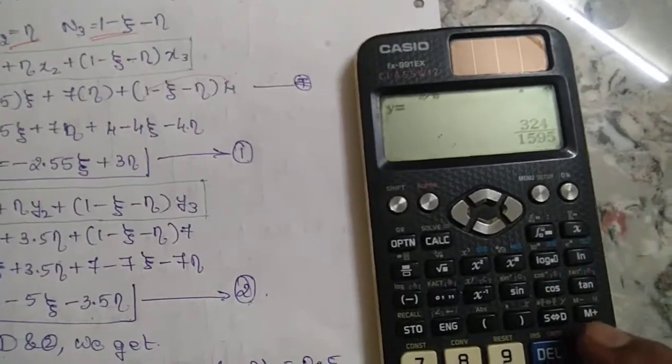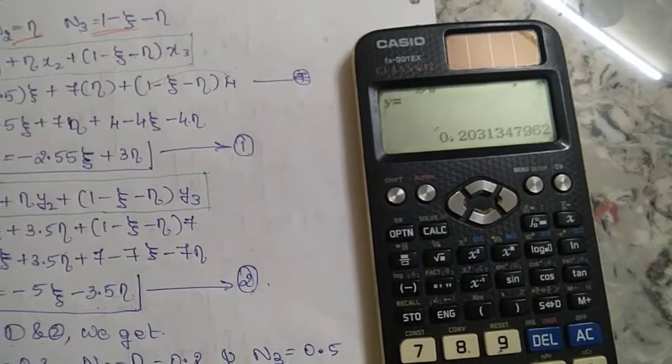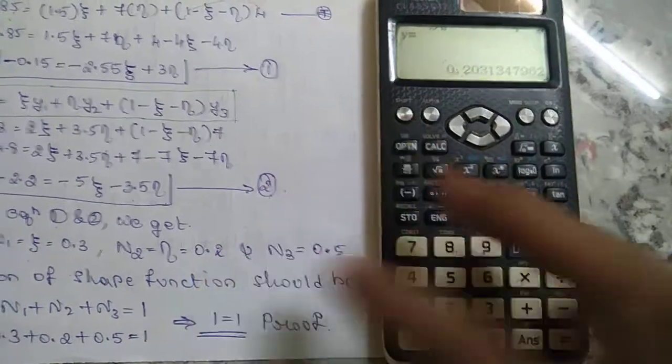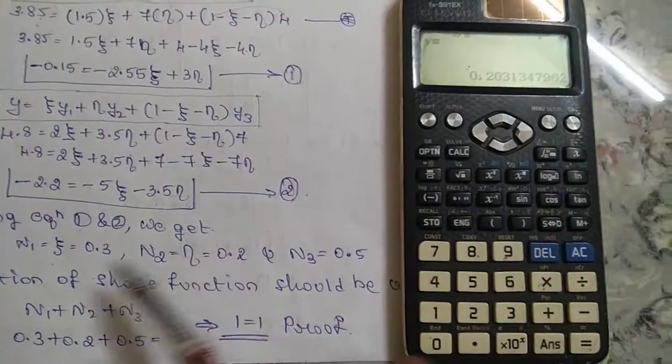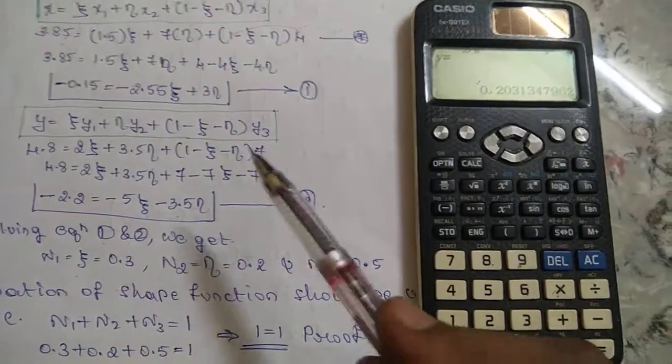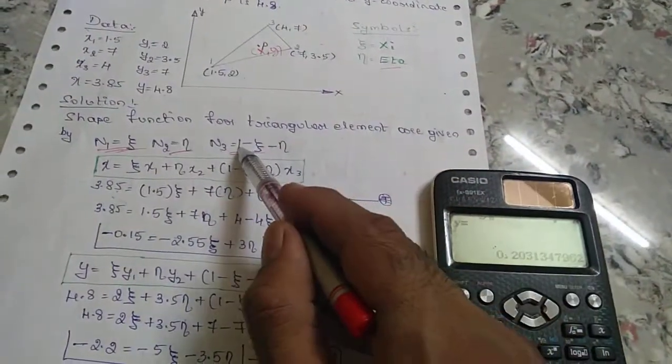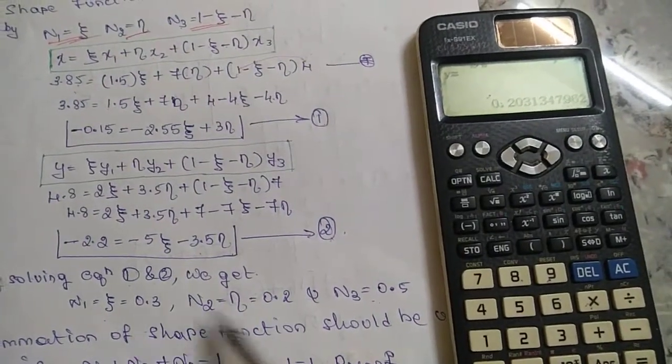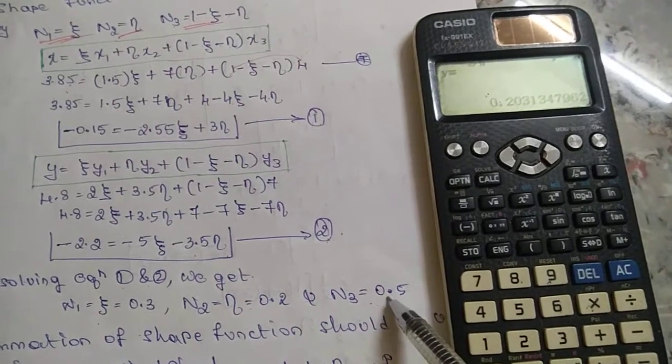Click equal to get 0.2978, which is approximately 0.3. Next, if you click equal again, you will get 0.2. When you substitute these into the equation, you will get the N3 value: N3 = 1 - ξ - η.